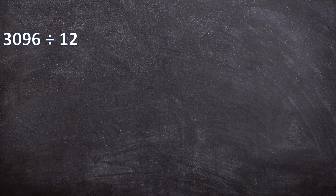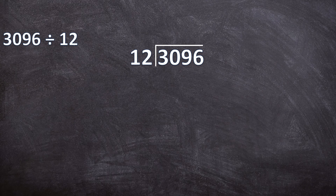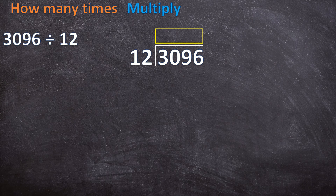The first thing you need to do is put this in the correct format. You need your long division bracket, then write your dividend underneath the bracket and your divisor in front of the bracket. Your quotient, your answer, goes on top of the bracket. We work with 4 steps: the first step is 'how many times,' the second is 'multiply,' the third is 'subtract,' and the fourth is 'bring down.' And remember, when we do long division, we go from left to right.